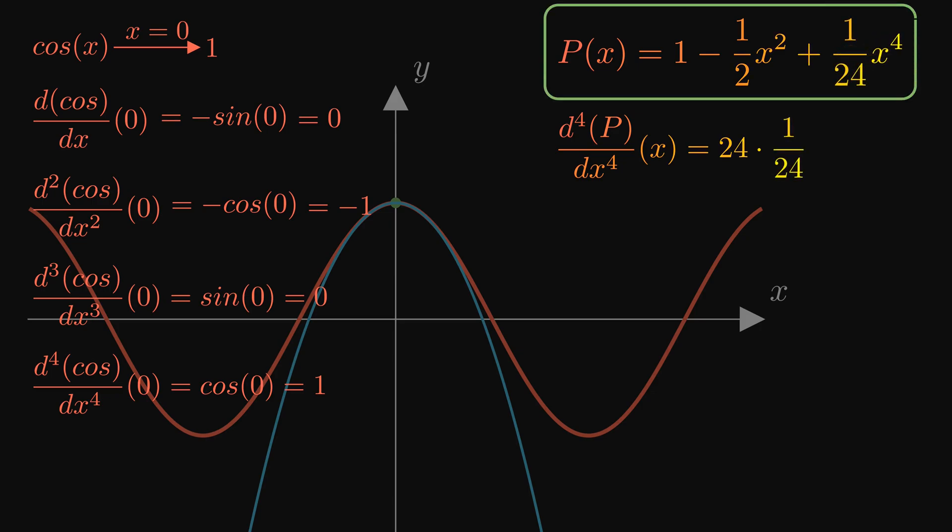We need this expression to equal 1, so the constant e must be 1 over 24. This polynomial, whose graph looks like this, approximates cosine around x equals 0 with astonishing accuracy.